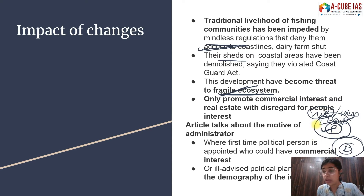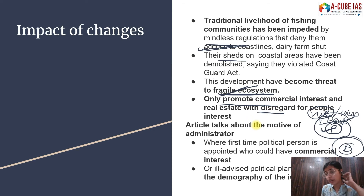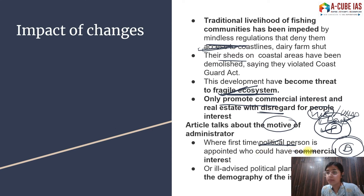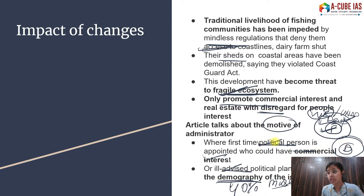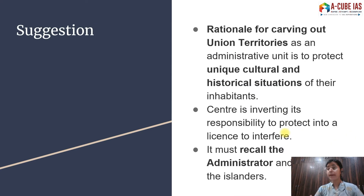Remember this statement: the World Bank and even UNDP have said development should be woven around people and not people around development. You can even find this in your NCERT. The article says these changes are promoting only commercial interest with disregard for people's interest. The article also talks about the motives of the administration — this might be a political move, as for the first time a political person rather than a civil servant is appointed.